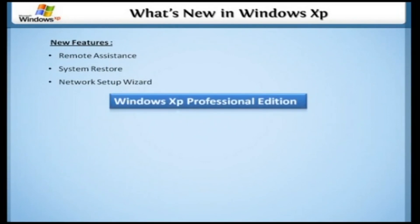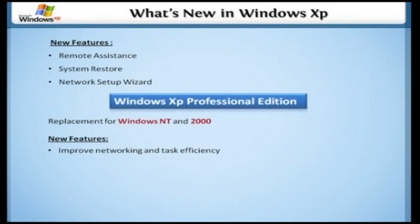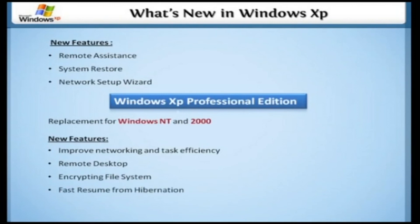Windows XP Professional Edition was the replacement for Windows NT and 2000. In addition to the features of the Home Edition, it added new features to improve networking and task efficiency, including Remote Desktop, Encrypting File System, Fast Resume from Hibernation, and support for 802.1x networking.